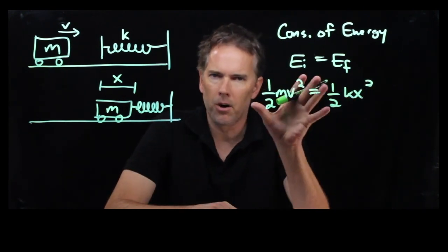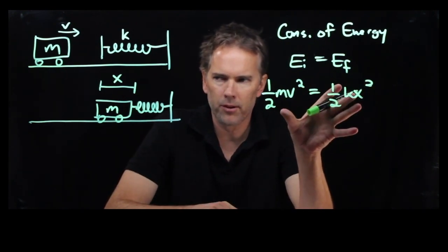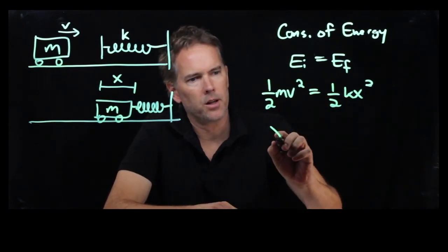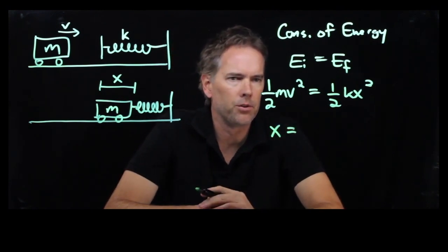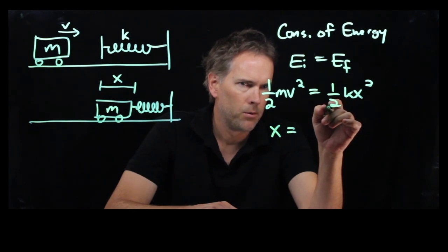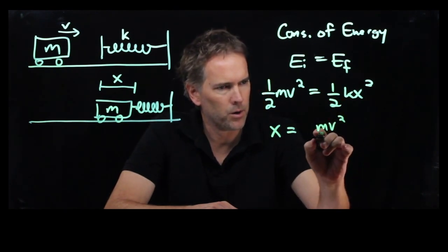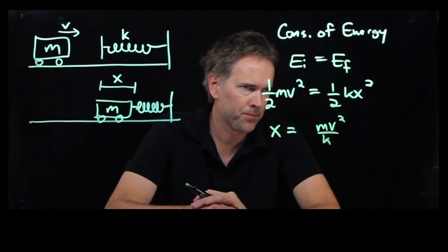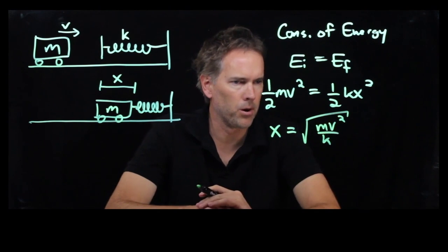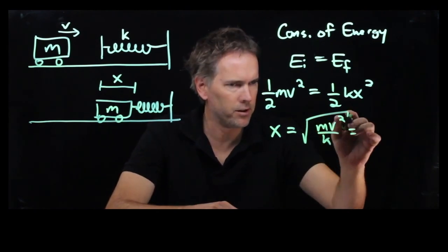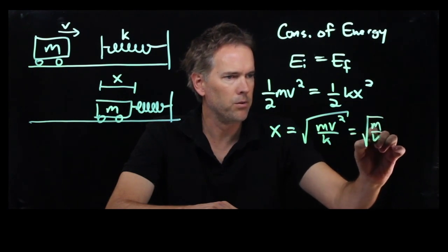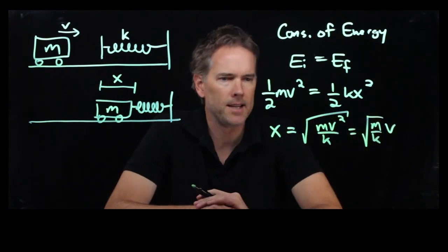Now this is our basic equation and if we're solving for x in this case, then we can write very quickly x is equal to what? We can cross out the half on each side. We've got an mv squared. We're going to divide by k. And then this was an x squared up there, so we need to take the square root of all that. If you have the square root of v squared, that just becomes v. And so we get the square root of m over k times v.